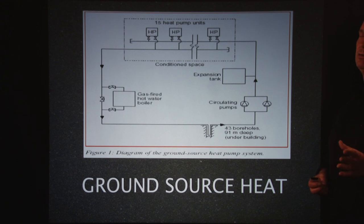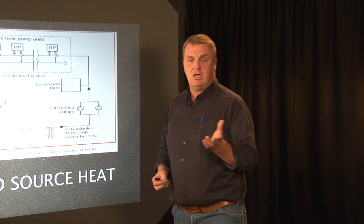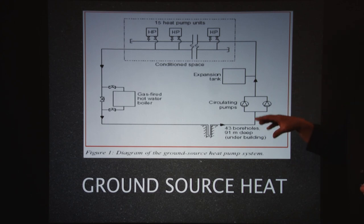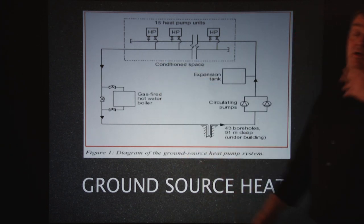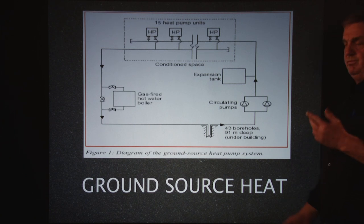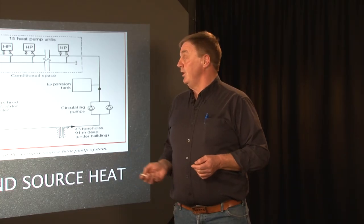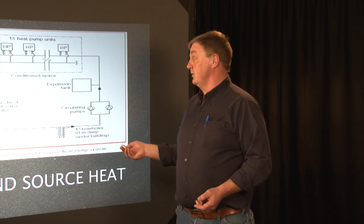Ground source heat — basically a geothermal system. You're not likely to come across many of them, but it is growing at a rate of about 10% a year. You'll have a borehole going down. The advantage is that at certain levels, the temperature of the earth — or wherever it's getting its heat from, maybe a water supply — is constant. You'll have a circulating pump and heat pumps up here which flow the heat around the building. Mainly residential properties have these now, simply because of cost — it costs a lot of money to drill deep enough to heat a large building. But with the price of energy going up, this is something that will come in the future.